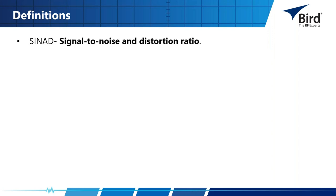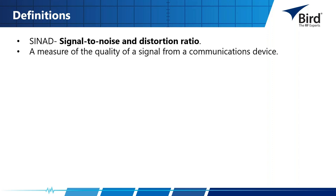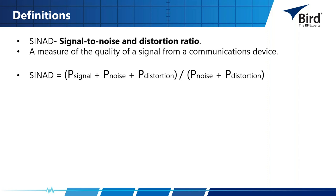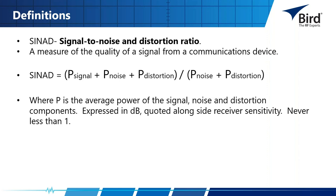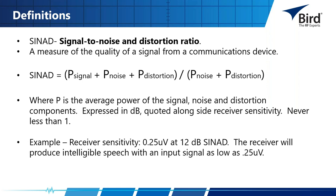SINAD is the signal-to-noise-and-distortion ratio — a measure of the quality of a signal from a communications device. SINAD equals the power in the signal plus noise plus distortion, divided by the power in noise plus distortion. It is expressed in dB, quoted alongside receiver sensitivity, and is never less than one. For example, a receiver sensitivity of 0.25 microvolts at 12 dB SINAD means the receiver will produce intelligible speech with an input signal as low as 0.25 microvolts.